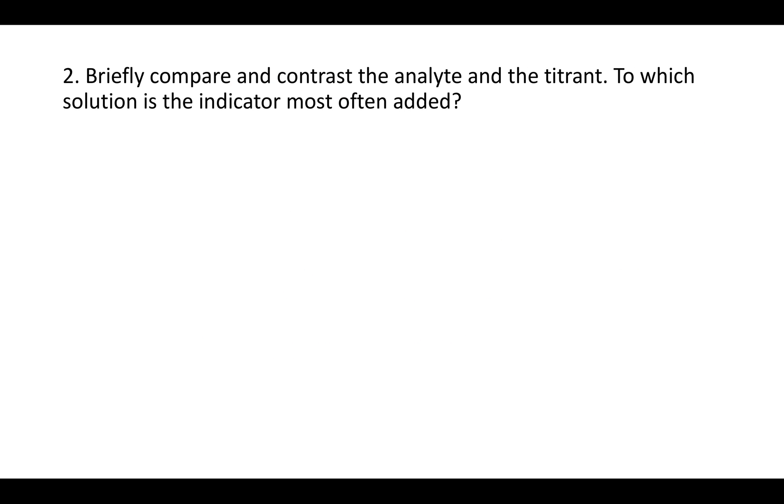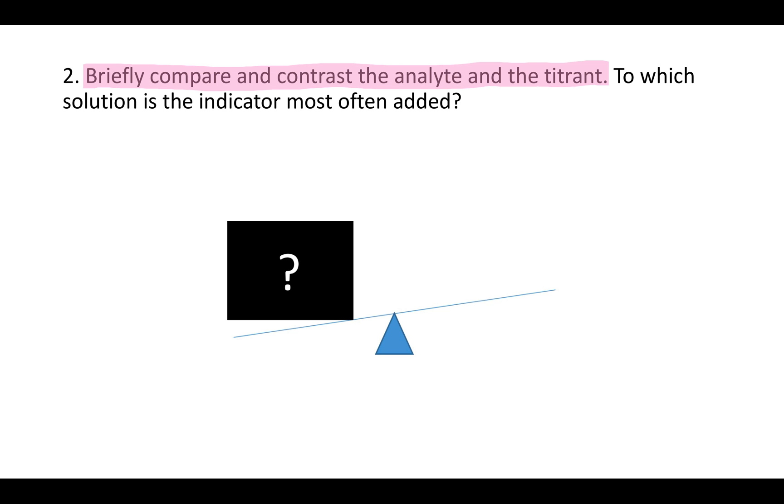Question 2 says, briefly compare and contrast the analyte and the titrant. To which solution is the indicator most often added? The first part of this is briefly comparing and contrasting the analyte and the titrant. So, these are two characters in a titration, a procedure called a titration.